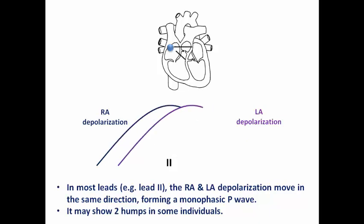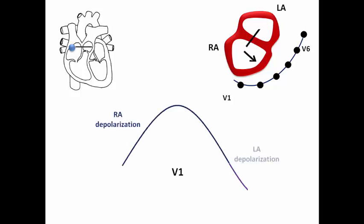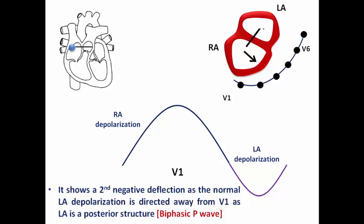Sometimes two humps may appear in some individuals — this is a normal variant. In V1 it is different. Right atrial depolarization moves toward V1, producing a positive deflection, but left atrial depolarization moves away from the positive pole of V1, producing a negative deflection. This explains why the P wave in V1 normally shows a biphasic morphology — because the left atrium is a posterior structure.